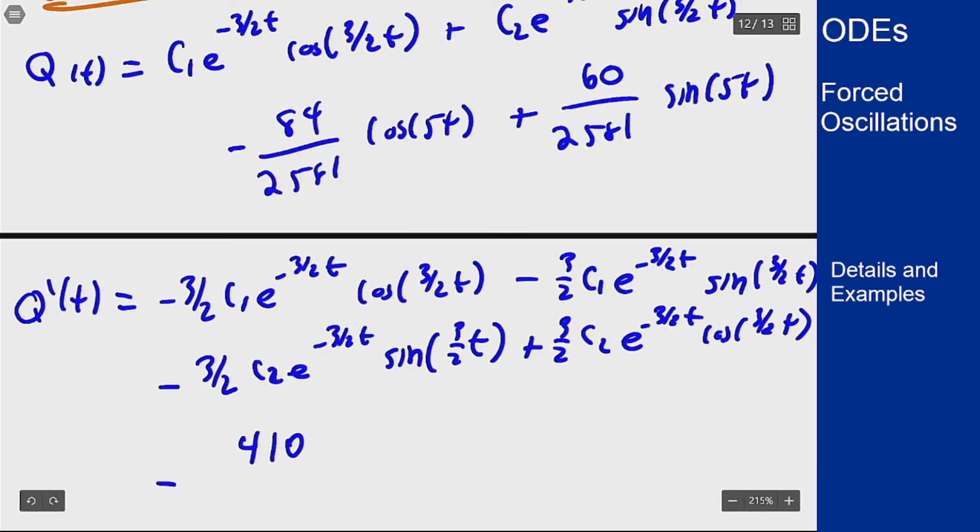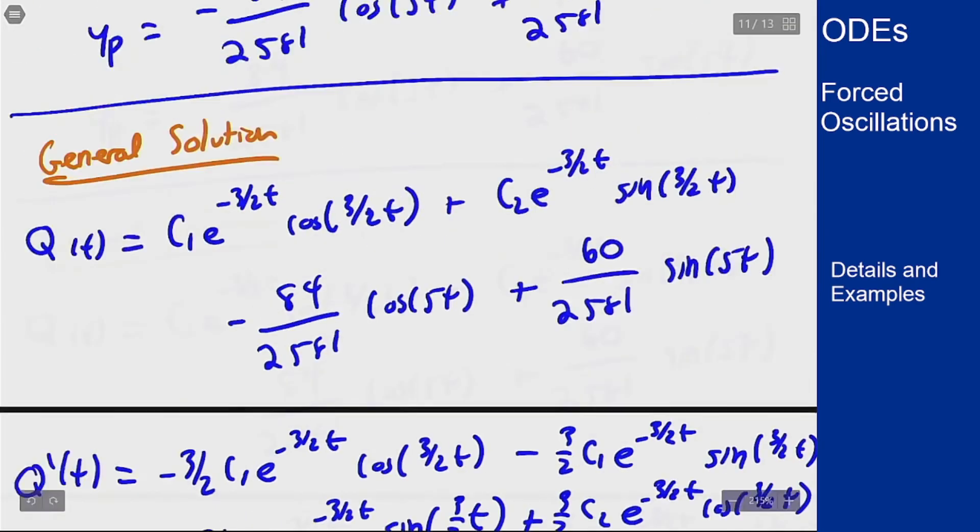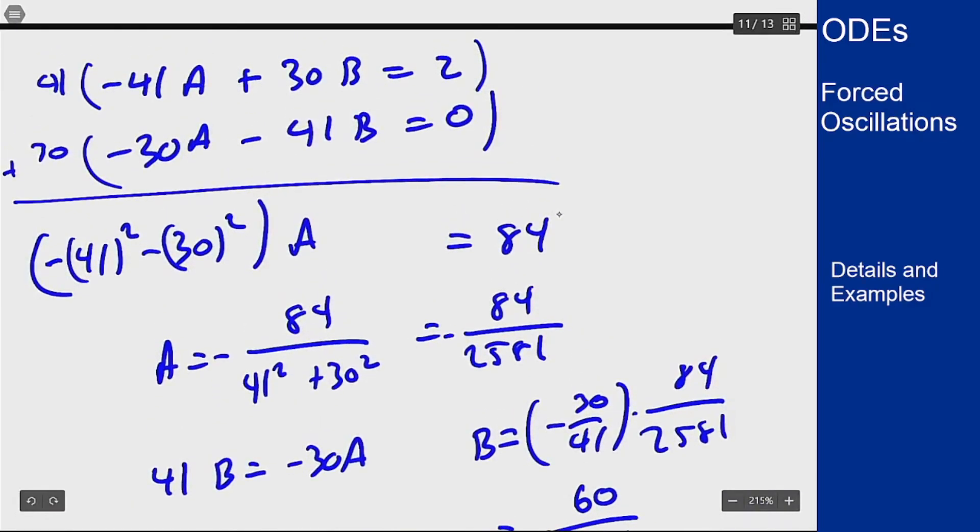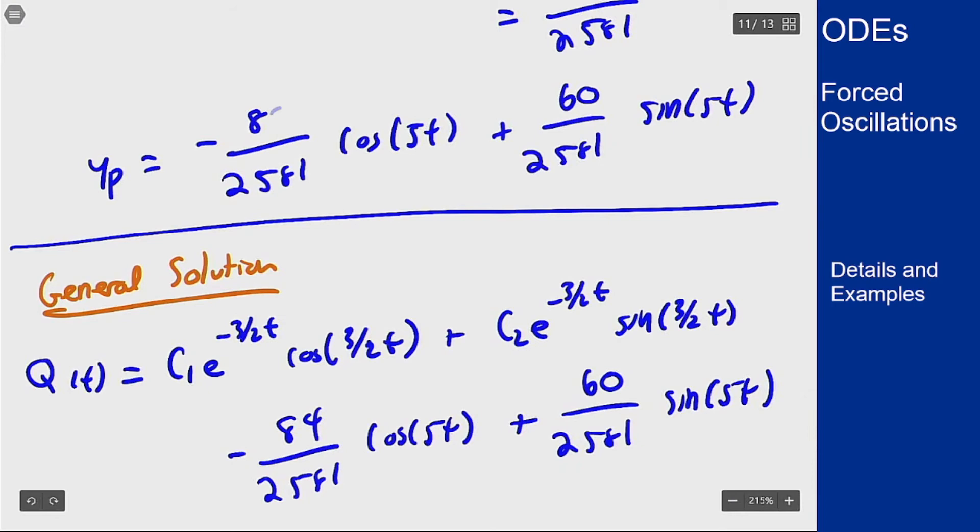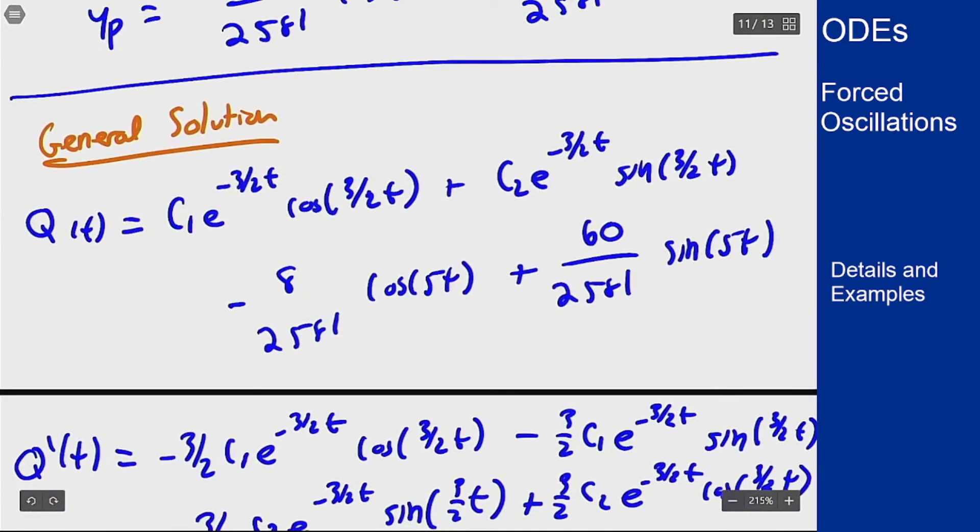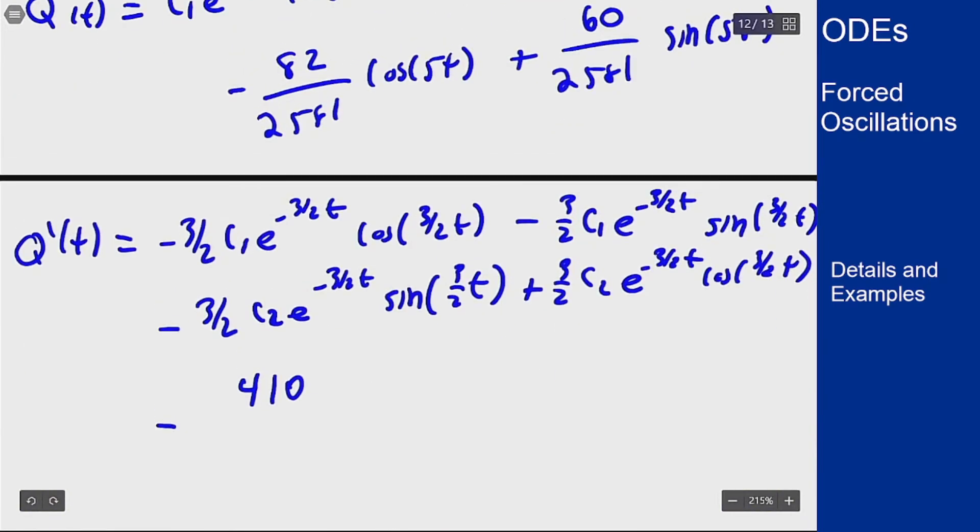I realize now I've made an algebraic error further up so we'll go back and correct that. This is not 84, this is 82. So this gets replaced by 82, and now we're back here with 410 over 2581 with a positive sign and sine of 5t, and then plus 300 over 2581 cosine of 5t.